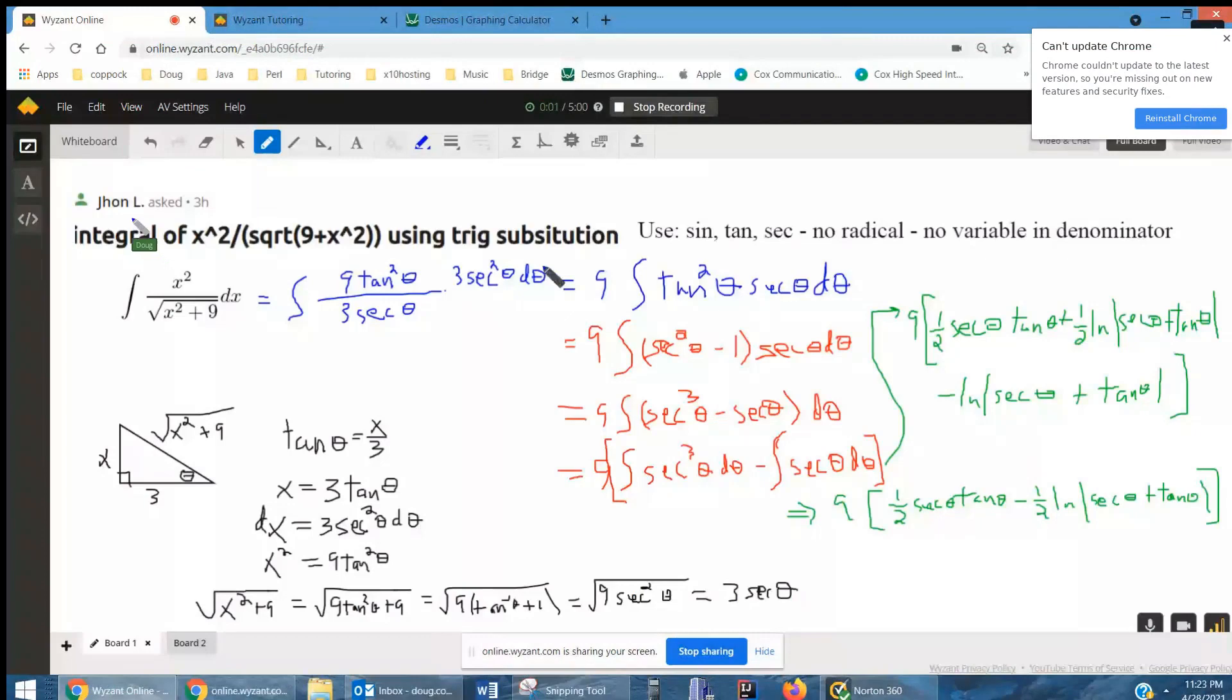The idea behind trig substitution is to sort of eliminate the radical when you have an expression that looks like this.